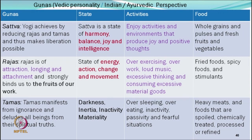Tamas manifests from ignorance and deludes all beings from spiritual truths. The state of mind is darkness, inertia, inactivity, and materiality. During this period, we are sluggish, oversleeping, overeating, inactive, passive, and in fearful situations. Food connected with this style is heavy meats, spoiled foods, chemically treated, processed, or refined foods. So if we find out what kind of food we prefer, we can determine what kind of gunas we may have in our life.